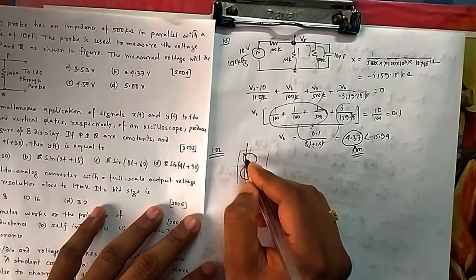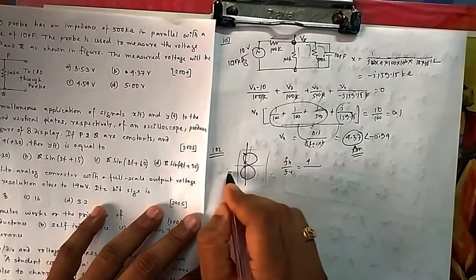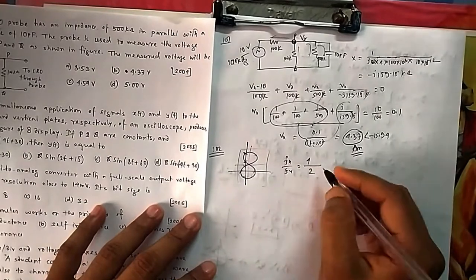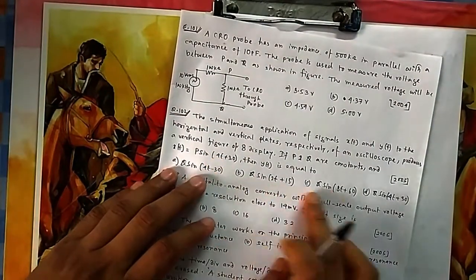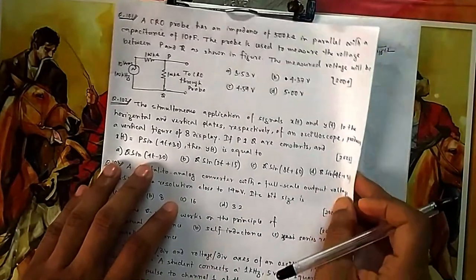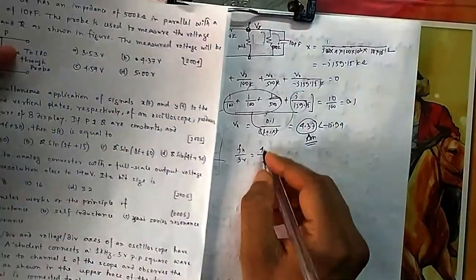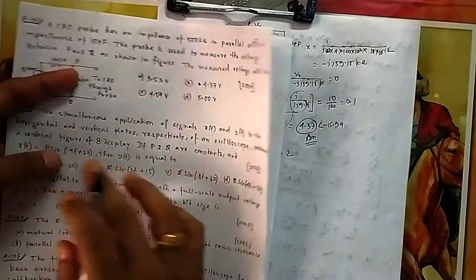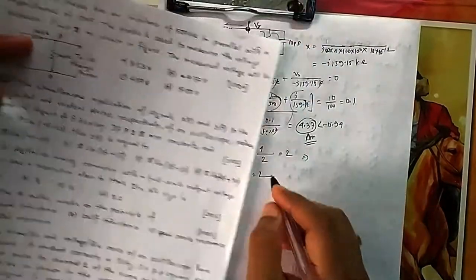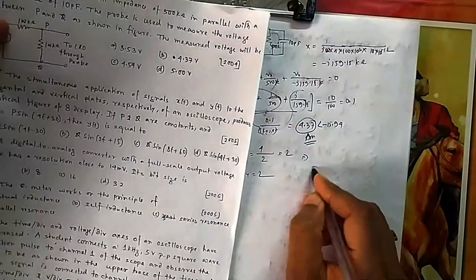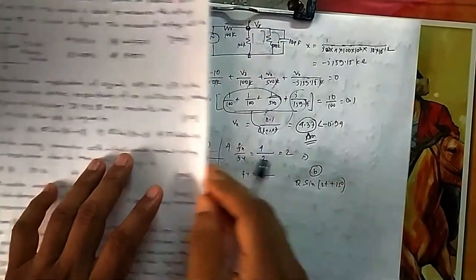Drawing a vertical line through the figure-8 gives a maximum of 4 cuts, and a horizontal line gives 2 cuts. Therefore fx/fy = 4/2 = 2. Since fx = 4ω (from x(t)), fy must equal 2ω. So y(t) has frequency 2t — whatever its magnitude or phase, the frequency must be 2ω. This matches option B.